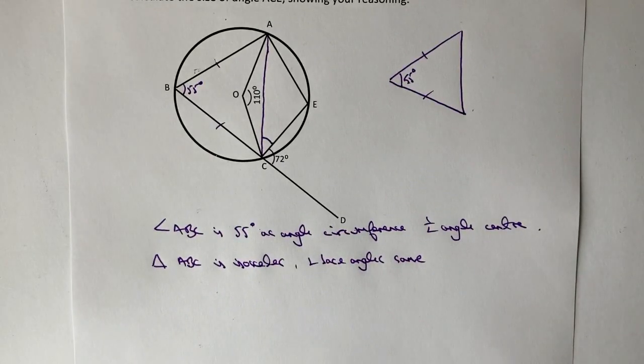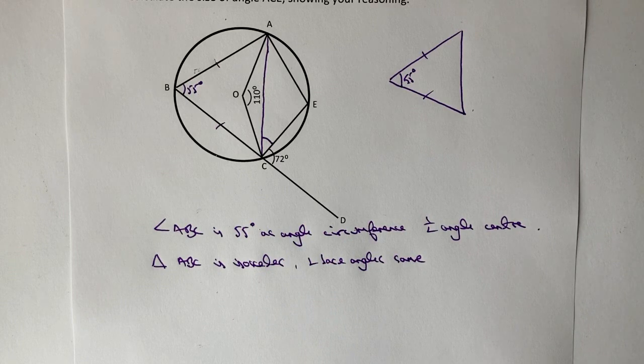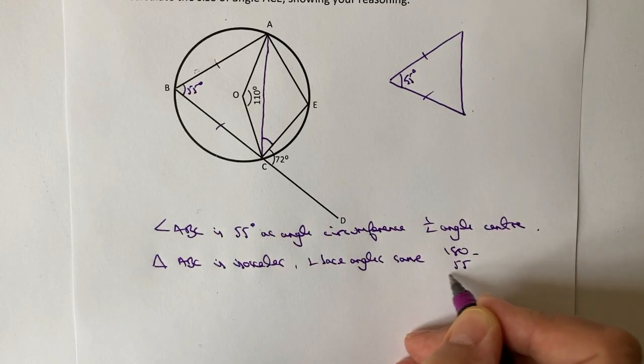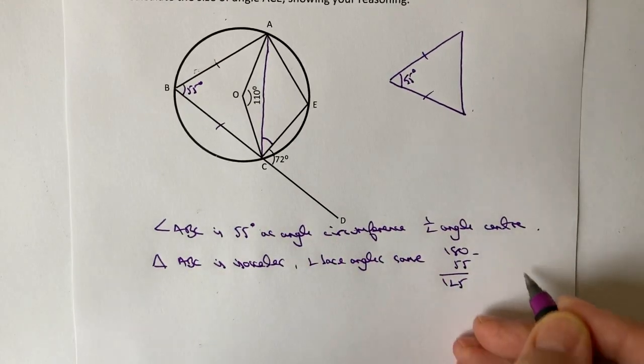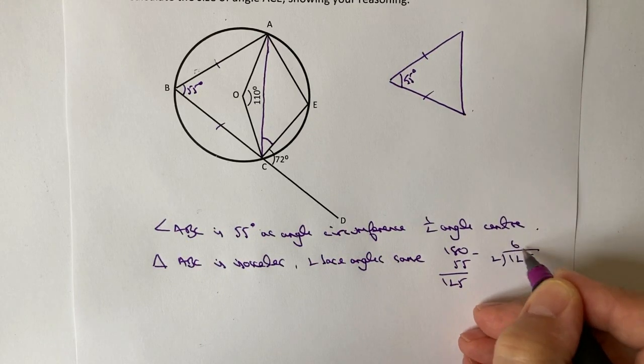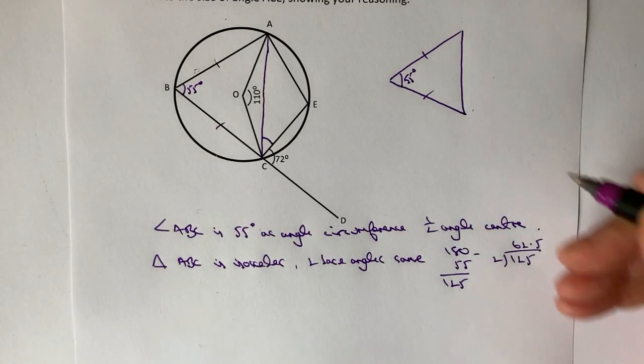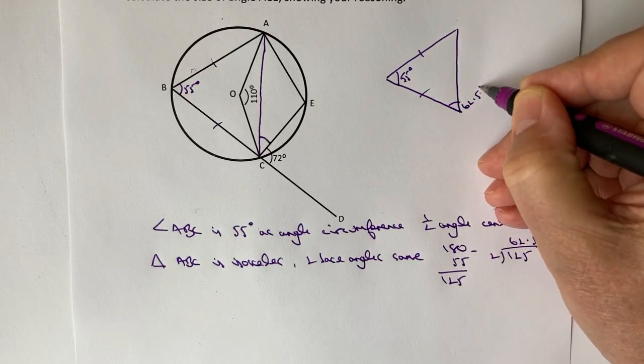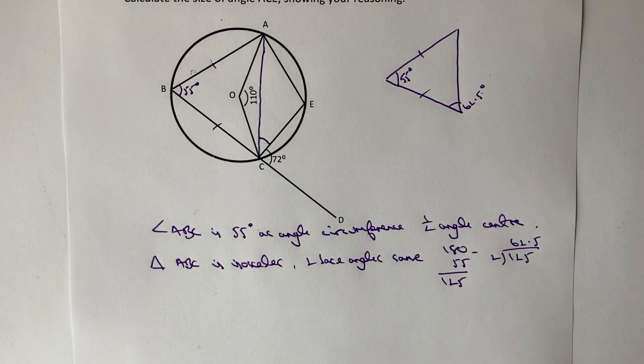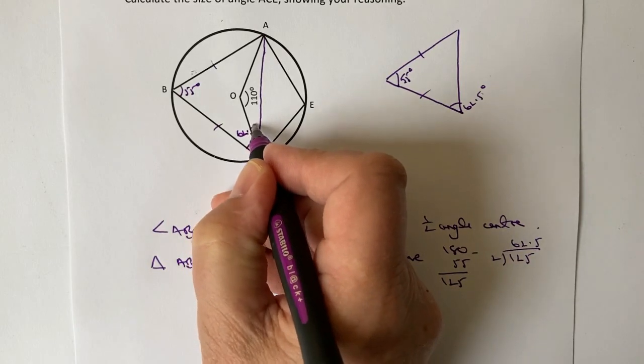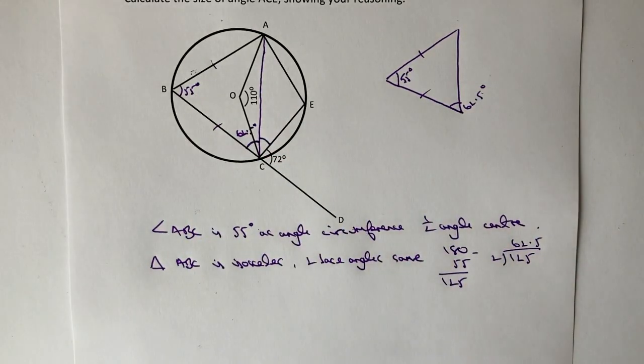So what we're going to do is we work out the base angle by saying, well actually, the total amount of angles. So the angles in a triangle add up to 180 degrees. If we take 55 away and then we divide by two, we're going to get the base angle. So that's going to be the same as saying 180 minus 55 is going to be 125 and then 125 divided by two is going to be 62 and a half degrees.